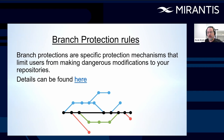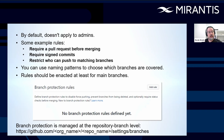Branch protection rules. This is probably the biggest topic I'm going to cover, especially because there are so many rules. Branch protections are specific protection mechanisms that limit users from making dangerous modifications to your repositories. By default, this doesn't apply to admins unless you go to the admin privileges and include them when you set this up. Some example rules include requiring a pull request before merging, requiring signed commits from everybody, and restricting who can push to matching branches. You can also limit merging to keep a linear history with no gaps.